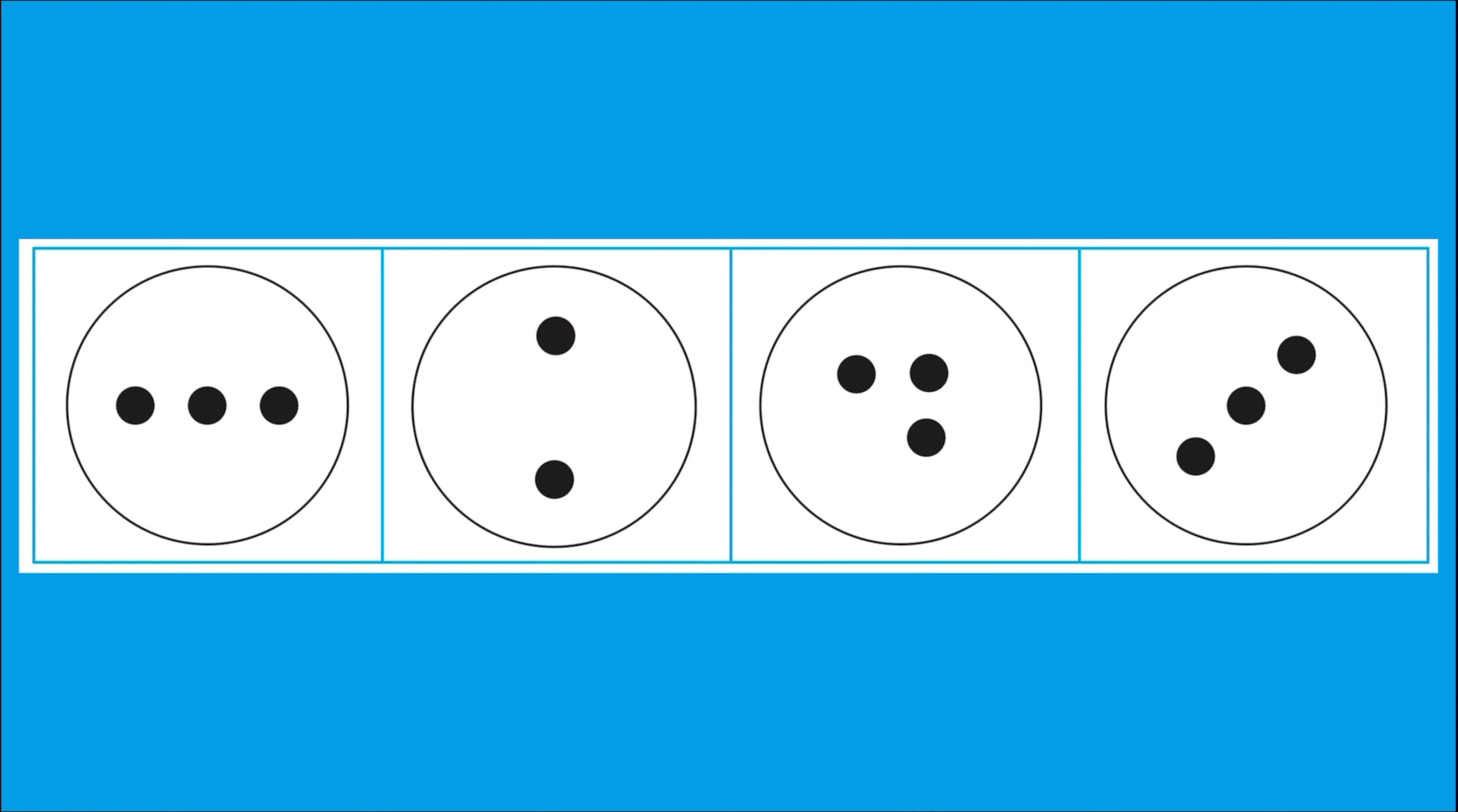Subitising is when you can see how many there are without having to count. So here, just by looking, can we see which is the odd dot pattern out? It's two, as the others all show three. We can see this just by looking. That's subitising.